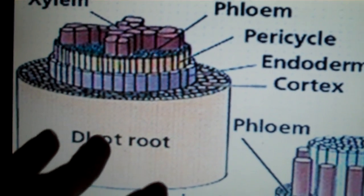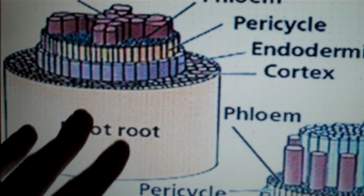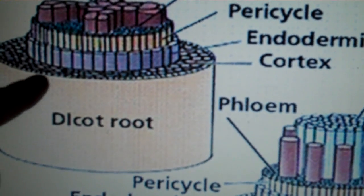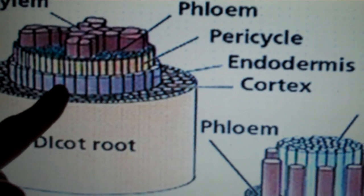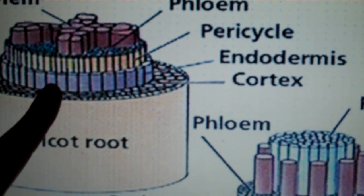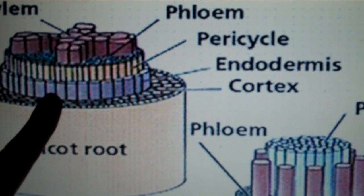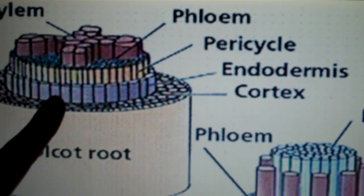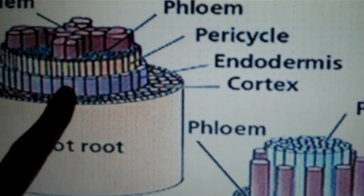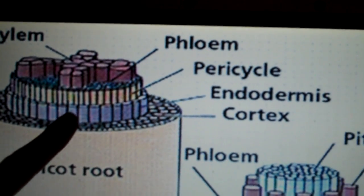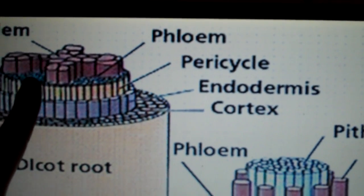Now in order to get to the xylem to be transported, it's going to have to cross through this purple layer here, the endodermis. Now since it's waterproofed, the water is going to have to pass through the cytoplasm of these cells. And so in a way, the endodermis is going to regulate how much water and which minerals are going to be absorbed by the xylem and the phloem.